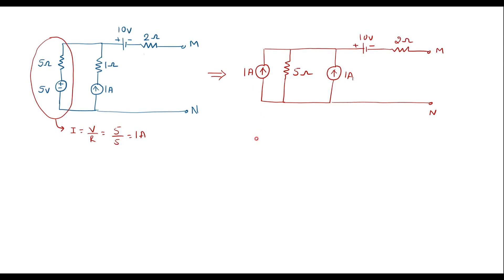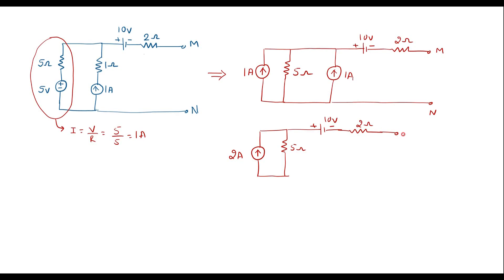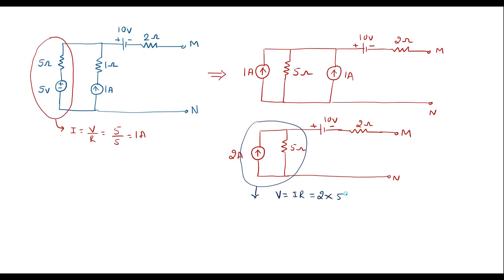The two current source magnitudes are added because the direction is the same. Now let me simplify this further. The magnitude is 2 amp. This 5 ohm is connected in parallel with the 2 amp current source. Here we have 10 volt and 2 ohm, with terminal M. Now I will convert this current source in parallel with the resistor into a voltage source. We know that V = IR, so V = 2 × 5 = 10 volt.